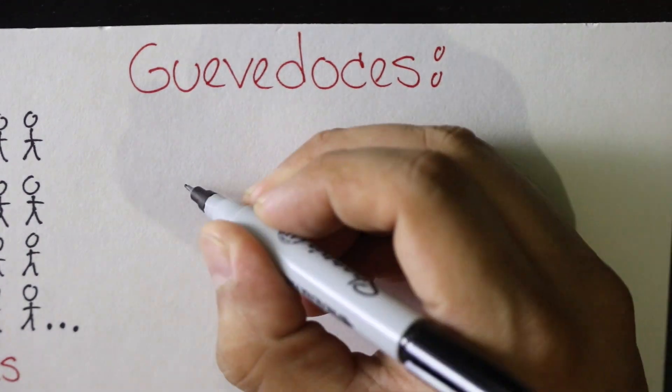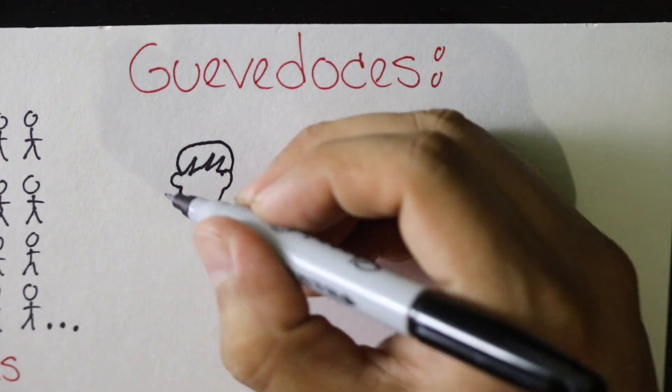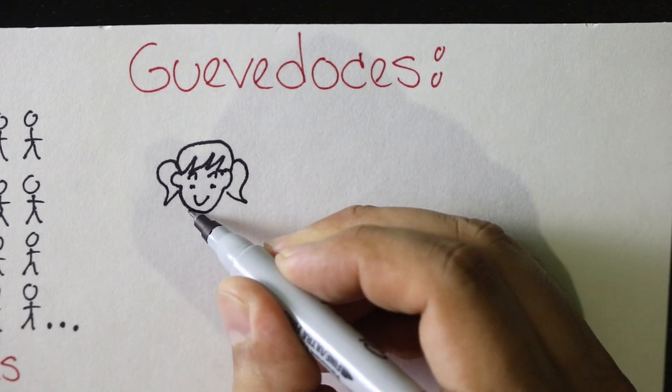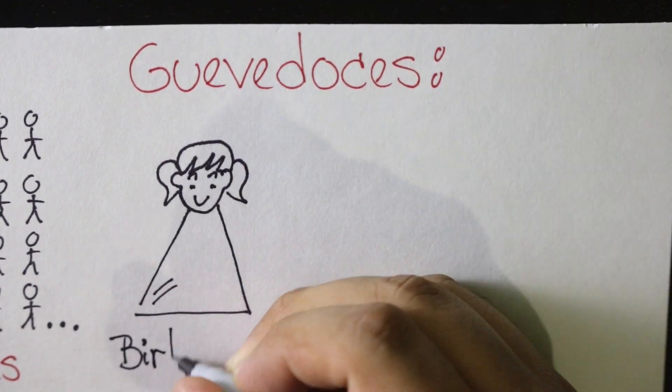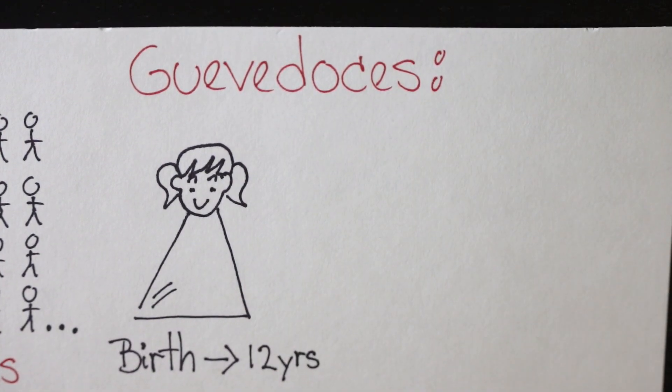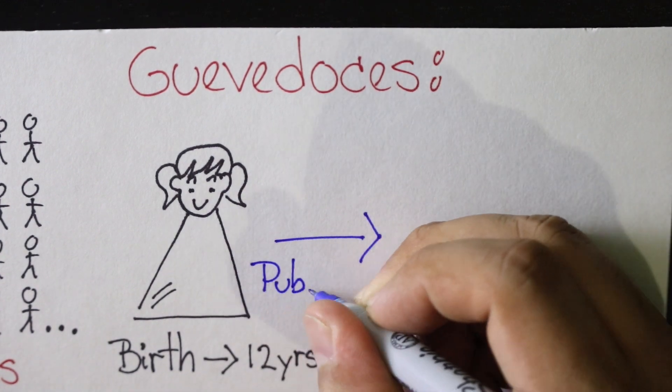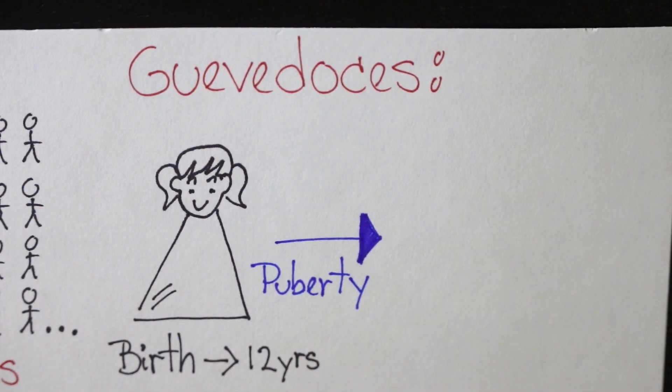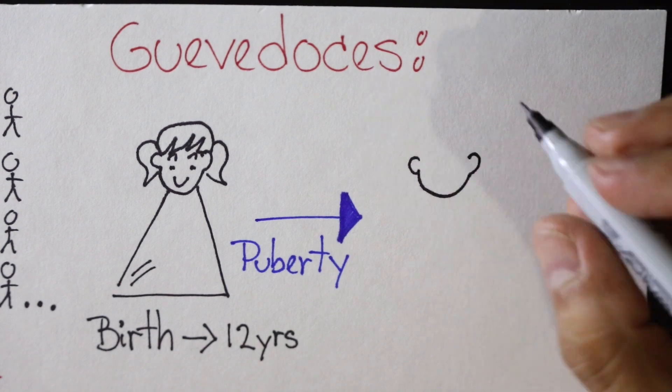Huevedosas spend their prepubescent years being raised as girls because at birth they look like girls. But once they reach puberty, a radical transformation occurs. The life they once knew changes forever as they are now considered boys.